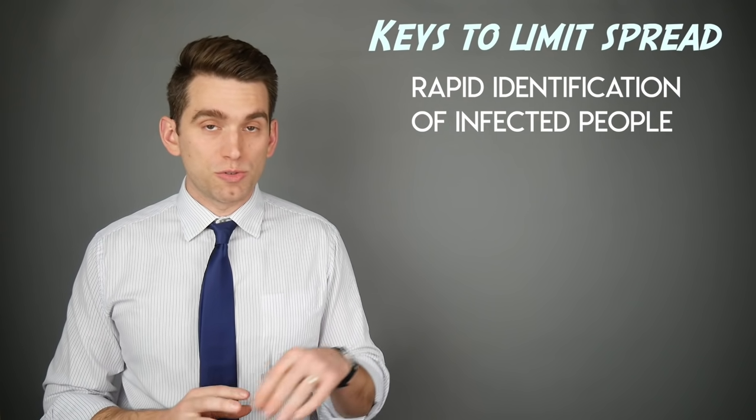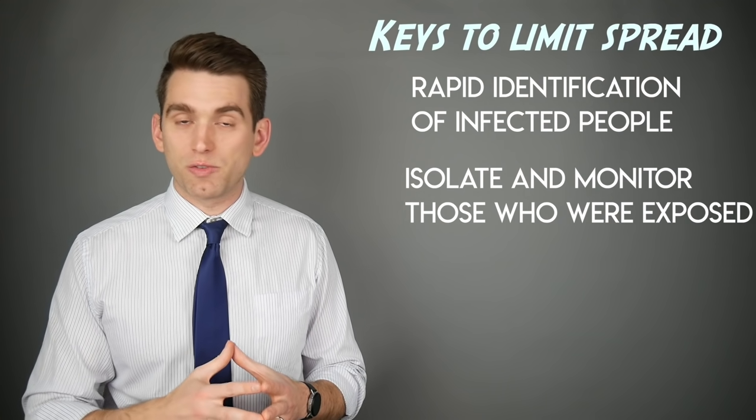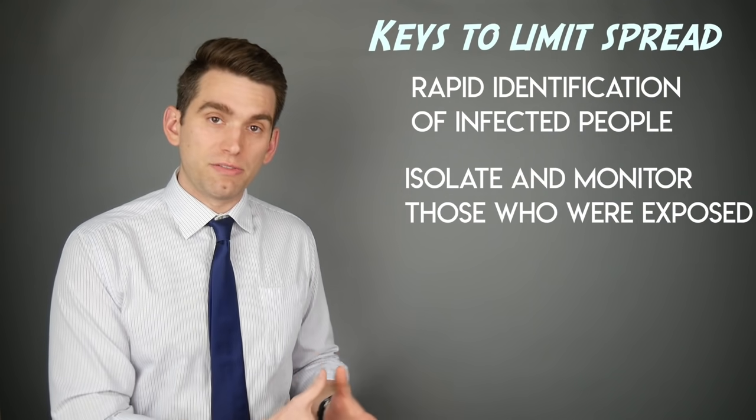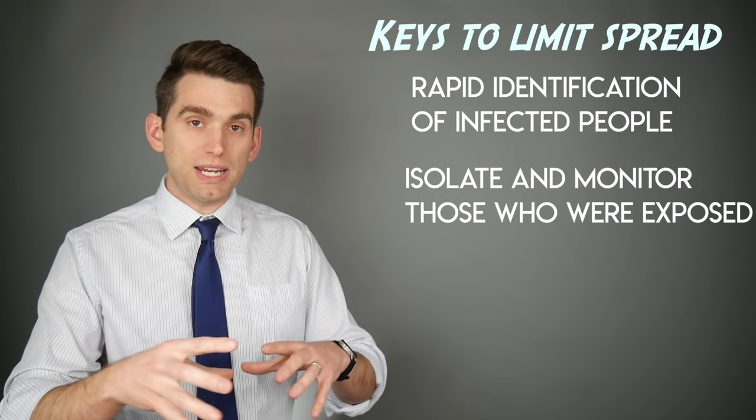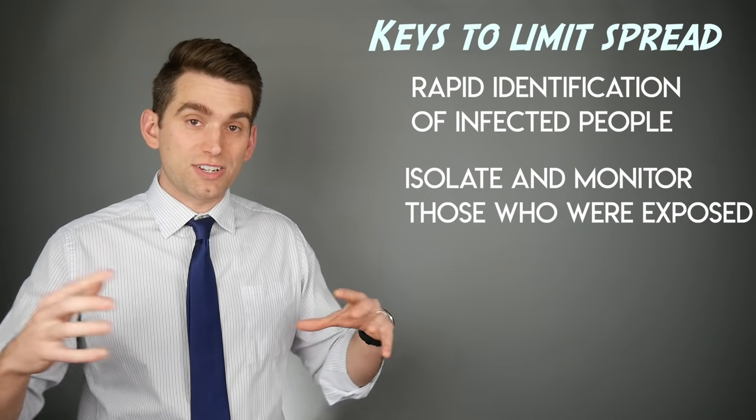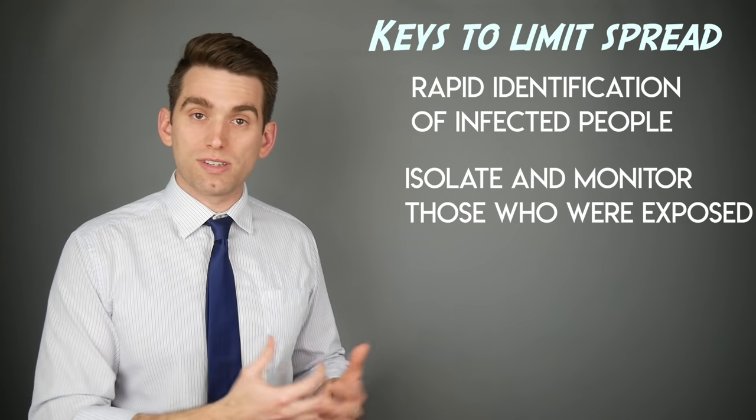Once they identify the individuals who were exposed, it's going to be about isolating them, monitoring their symptoms for a period of time, usually one to two weeks, to see if they develop signs of the infection, testing them, and then repeating that process with anybody who's infected to make sure you squash and quarantine and isolate all those peoples who are sources of the infection.